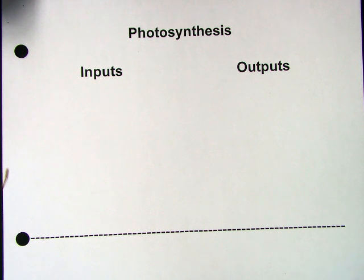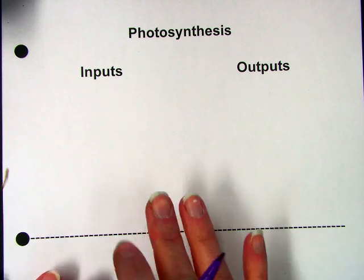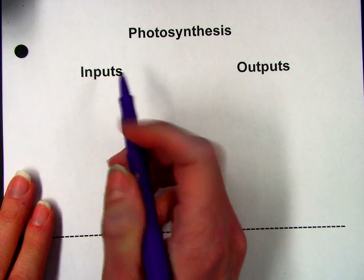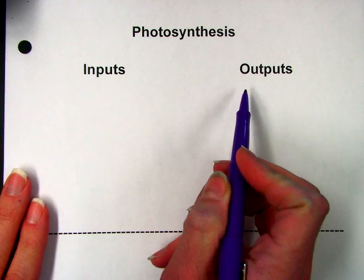So today we're going to be comparing photosynthesis and cell respiration to reactions that happen in cells. Photosynthesis happens in plant cells. So first we're going to start by looking at the inputs and the outputs of photosynthesis.